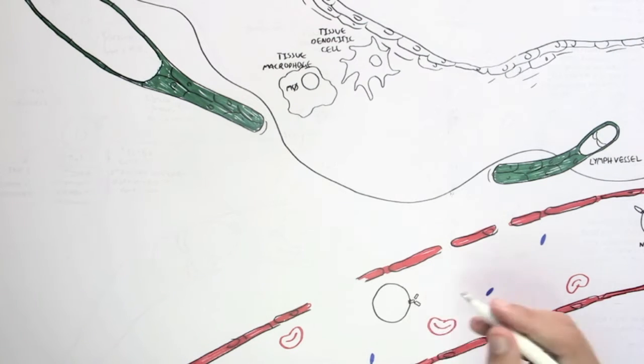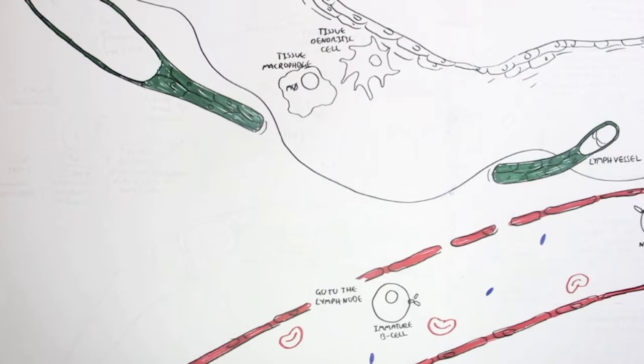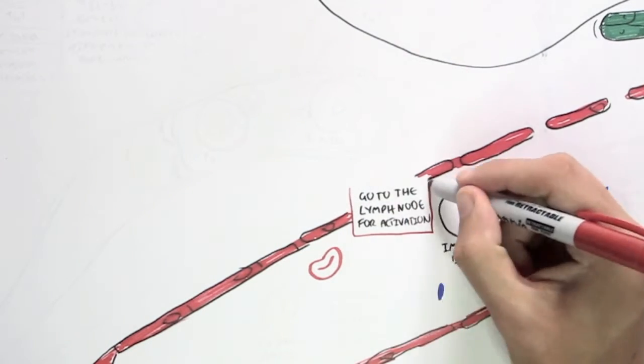But in an immature B cell form, this immature B cell for example, it will circulate in the blood vessel and will go to the lymph node first for activation.